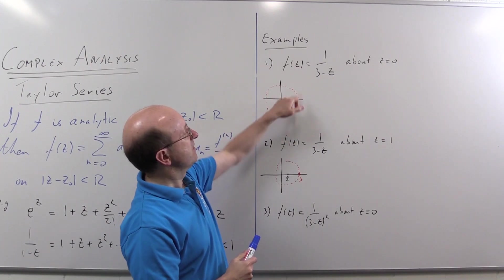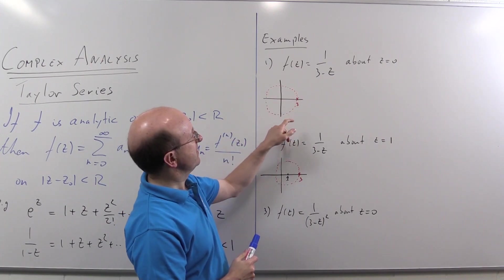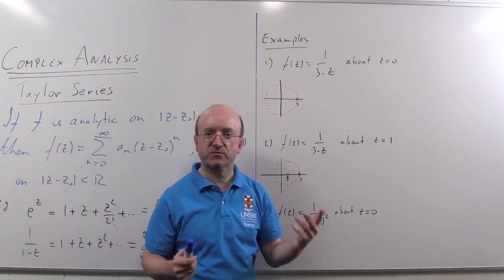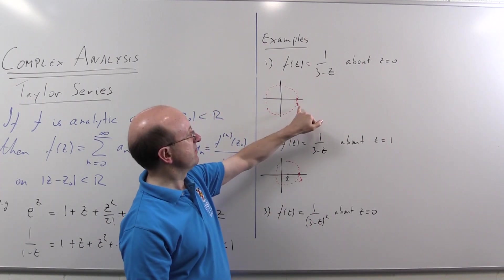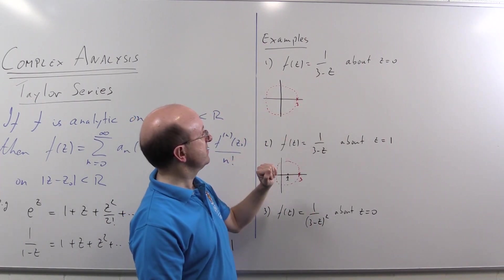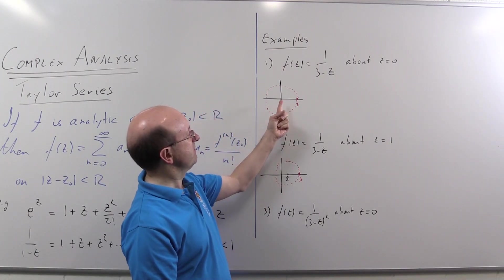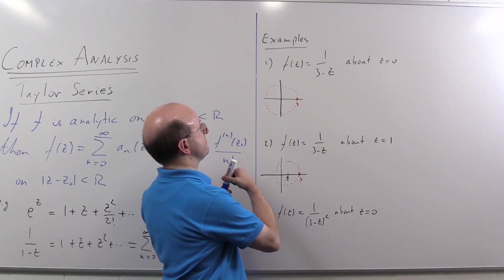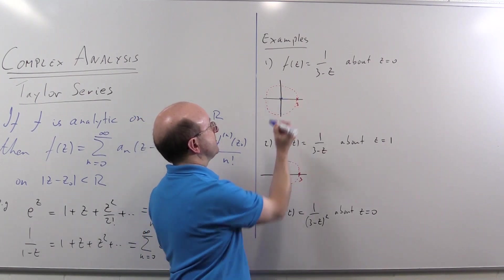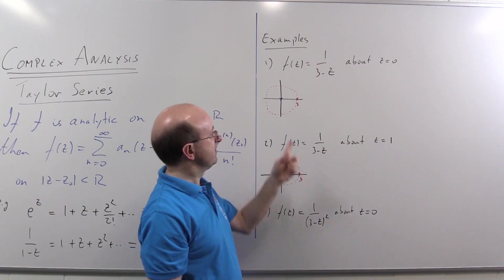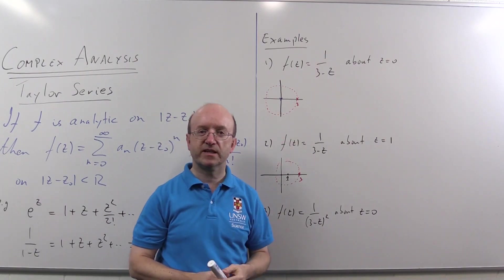So in this case, one over three minus z, well the singularity, the place where f is clearly not analytic, is at z equals three. And our theorem says as long as we're analytic on a disk, then we'll get a Taylor series. And we're going to be centered at zero.